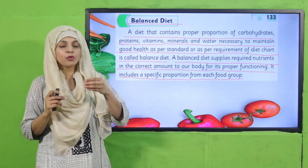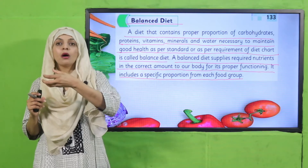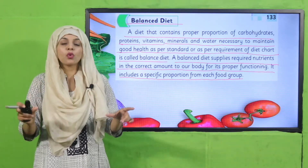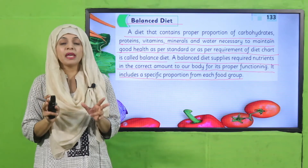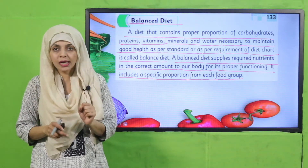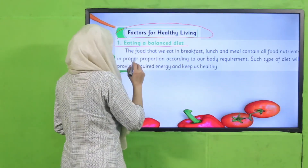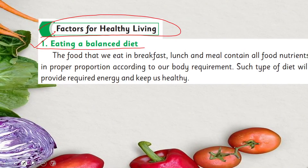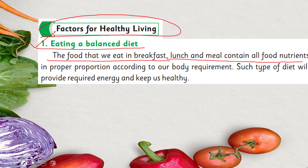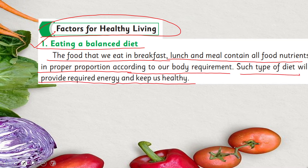Dry fruits, fruits and vegetables, meat, dairy, and carbs — all things must be in proper portions to make a balanced diet for good health. So factors for healthy living: the first factor is eating a balanced diet. The food that we eat in breakfast, lunch and dinner must contain all food nutrients in proper portions according to our body requirement. Such a diet will provide required energy and keep us healthy.